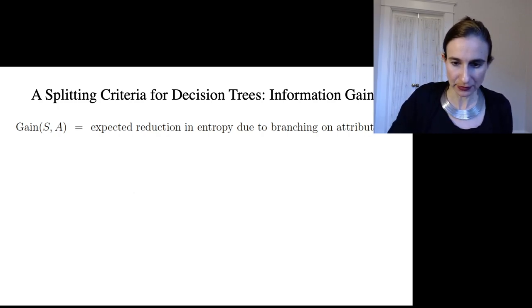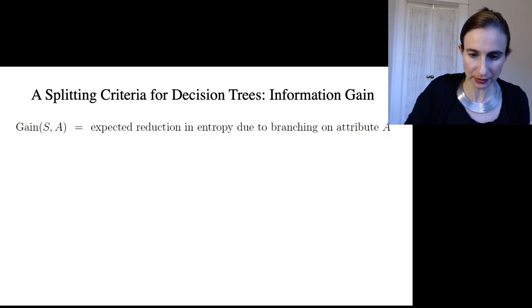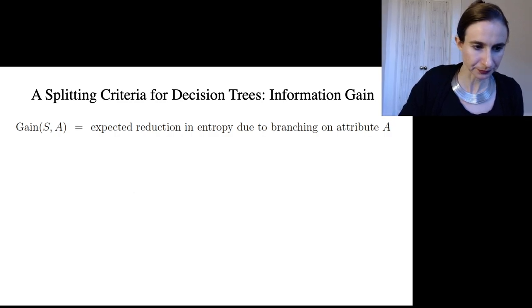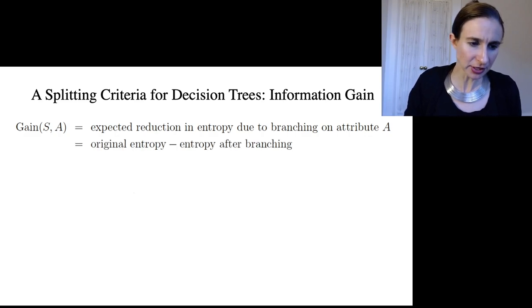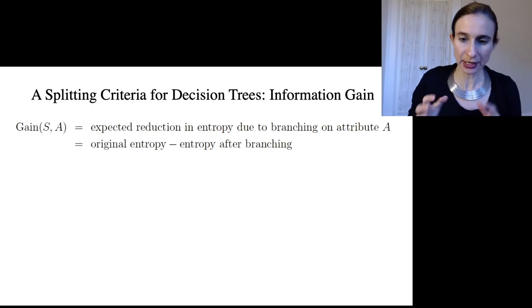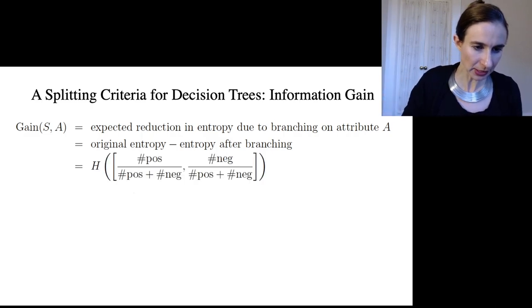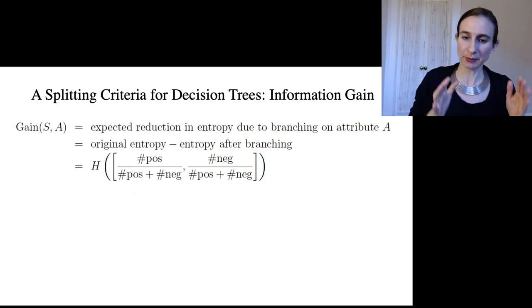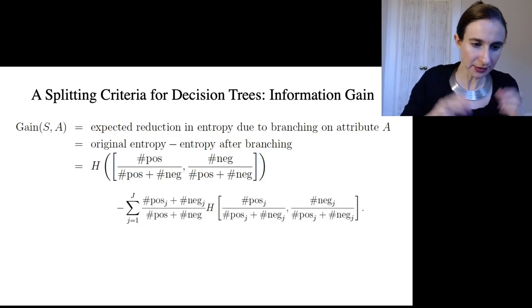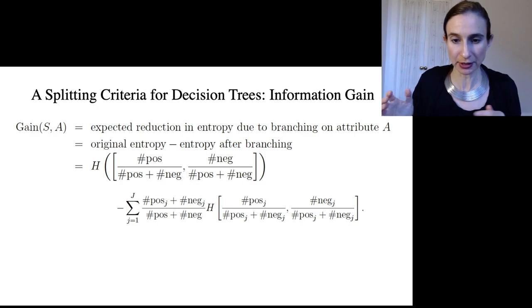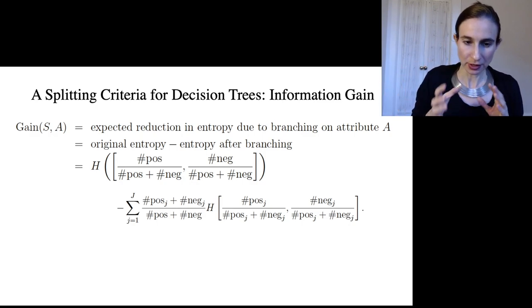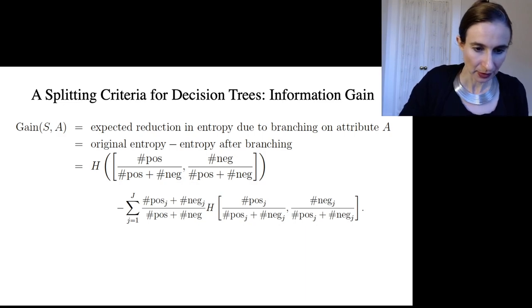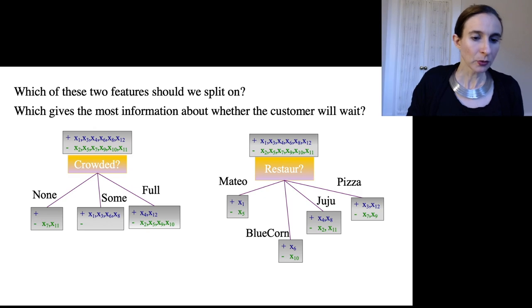I want to make this concrete—what this information gain criteria is for splitting. So it's actually the difference between the original entropy before you made the split and the entropy after you do the branching. So this is the entropy of the data before you split, and then this is the average entropy after you split, and you're averaging over the different branches after you split.